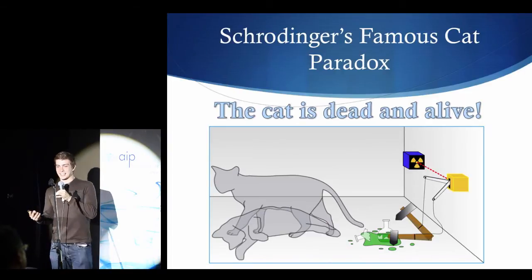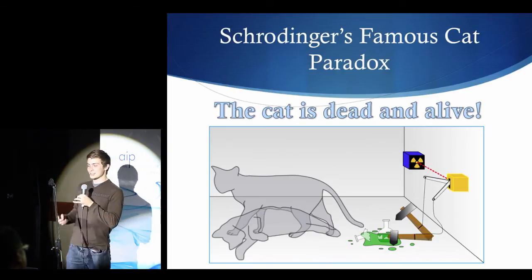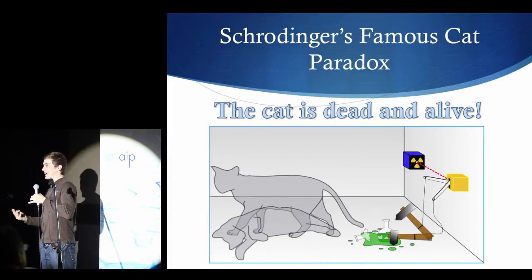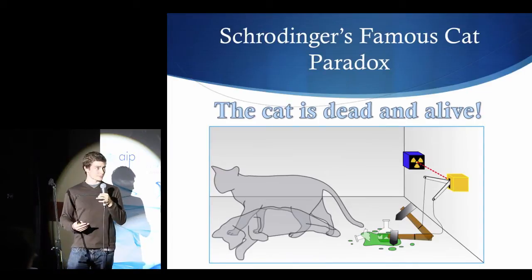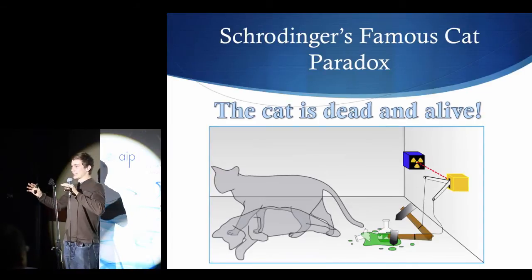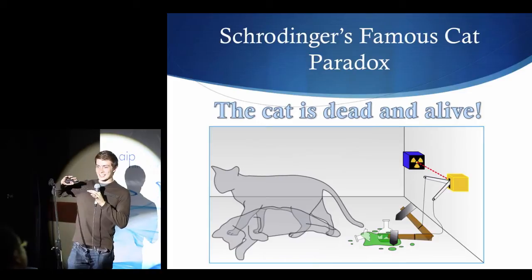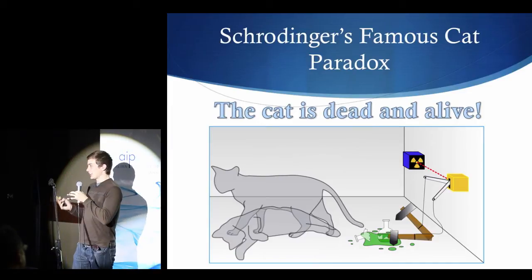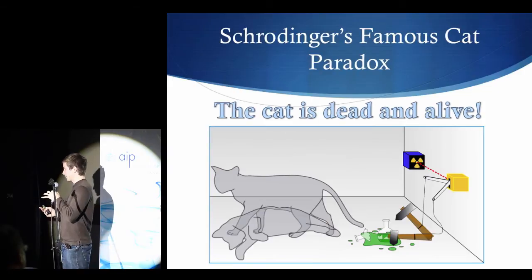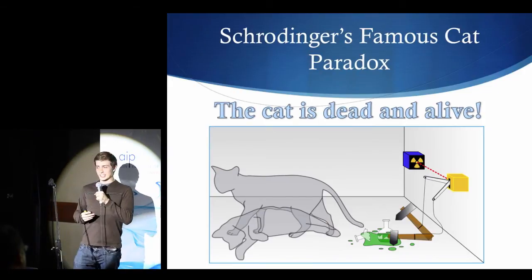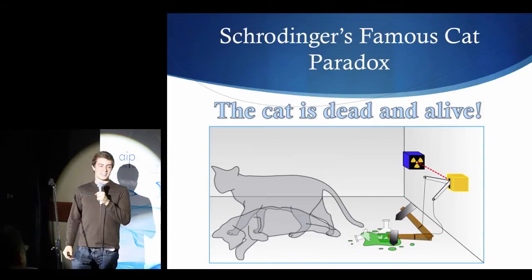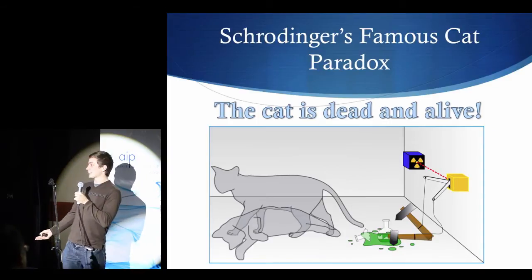Now, the other scenario is that the atom never decays, the switch is not flipped, the hammer does not break the poison, and the cat, thankfully, stays alive. Now all this is going on inside the box. You can't see what's happening. So therefore, the cat is both dead and alive at the same time, which is kind of a paradox. This does not fit our normal view of reality. How can something be dead and alive?